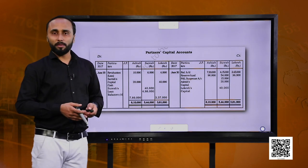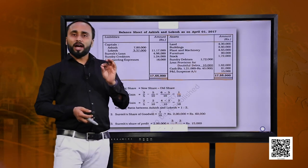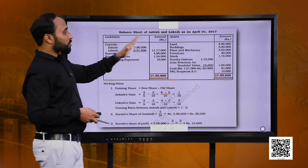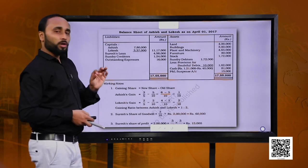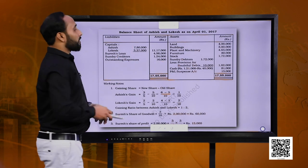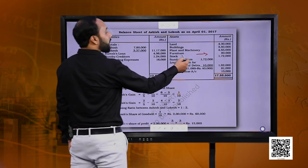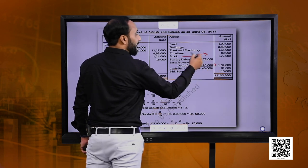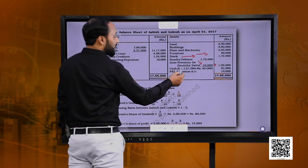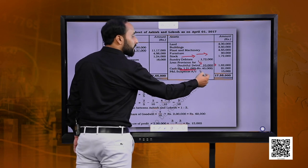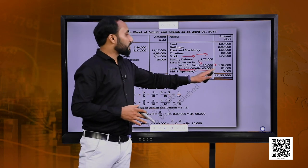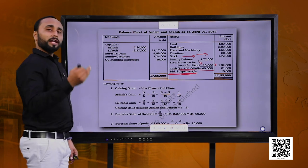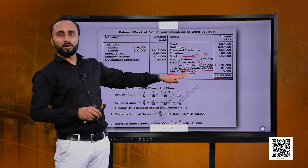Now we prepare the balance sheet. Remember to show updated values for all assets and liabilities that changed. Stock has reduced and furniture has increased, as per the revaluation. Also create the provision for doubtful debts. Adjust the cash balance — earlier we had 1,21,000 out of which 40,000 was paid to the retiring partner, leaving 81,000. The P&L Suspense Account for Suresh's profit share is shown on the asset side of the balance sheet.